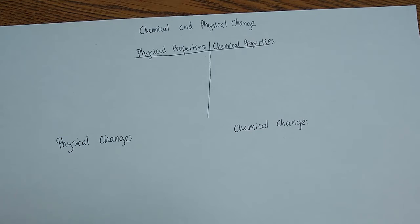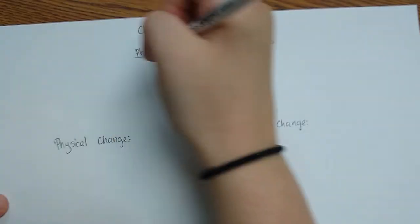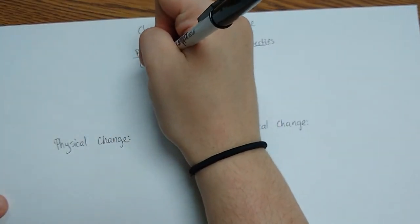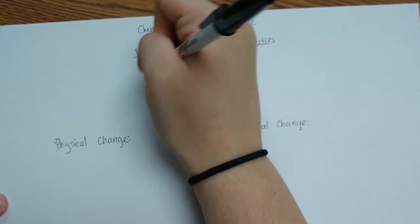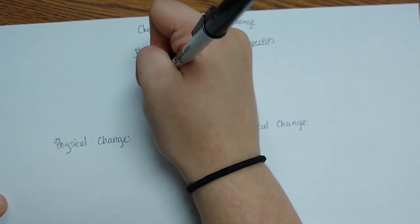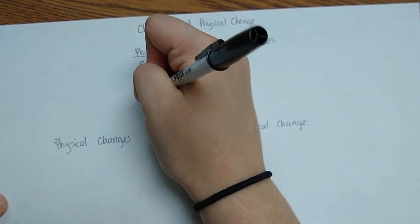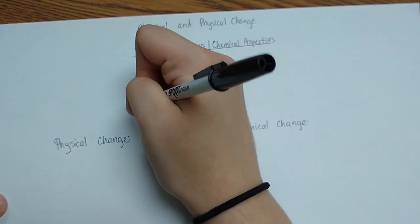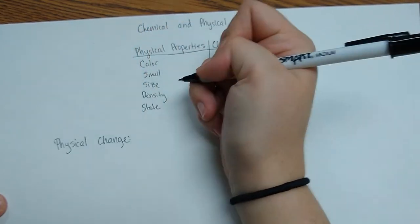So physical properties are properties that can be observed or measured without changing the identity of the matter. Some examples of this are the color, smell, size, density, the state, solid, liquid, or gas.